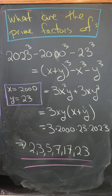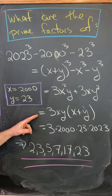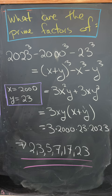But that simplifies to, after factoring, 3 times x times y times x plus y, which is 3 times 2000 times 23 times 2023.